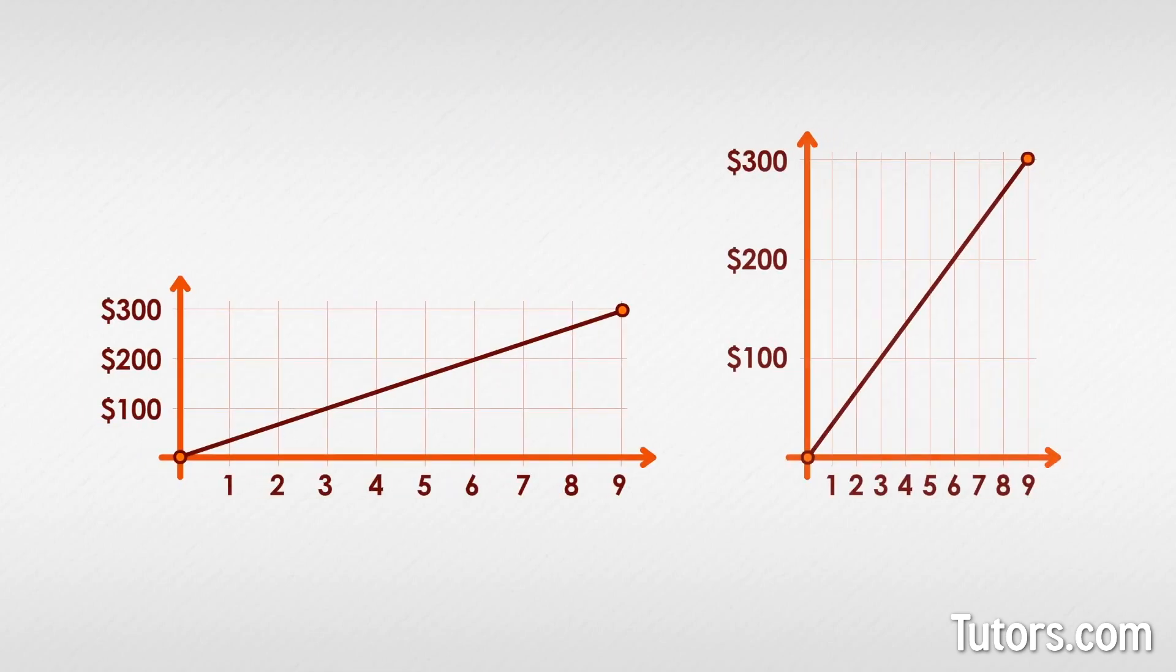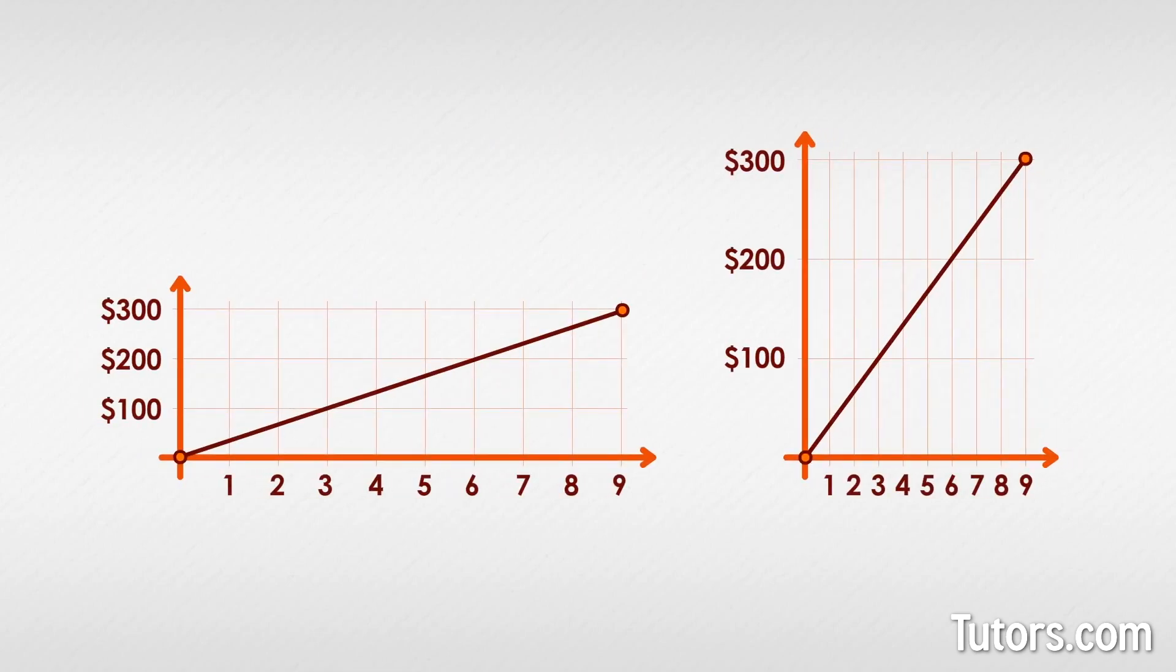Here are two line graphs of the same information, but in the second one, we have doubled the height of the vertical increments and halved the width of the horizontal increments, making the information look much different. The second graph would make many people very nervous that the prices being tracked are out of control, rising and falling dramatically. Yet the two graphs show the same information.